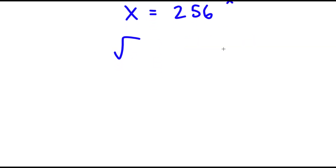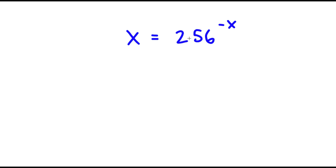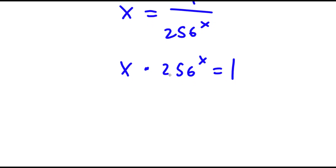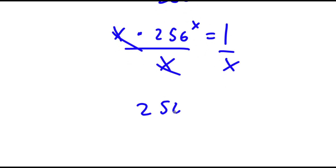Actually, I'm going to rewrite 256 to the power of negative x as 1 over 256 to the power of x. Now I can multiply x with 256 to the power of x and this is equal to 1. Now I'm going to divide both sides by x, so now I have 256 to the power of x is equal to 1 over x.